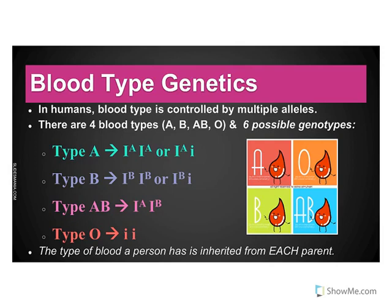For your notes on blood type genetics, before we get into practice problems, we need to talk about the genotypes and phenotypes of blood. There are four known blood types: A, B, AB, and O blood. But there are six possible genotypes.